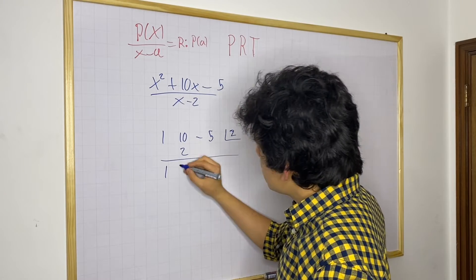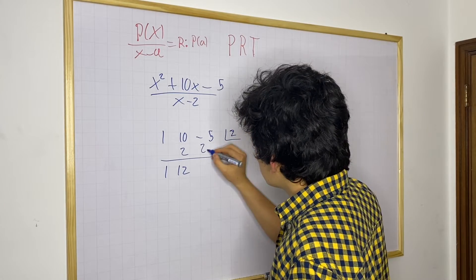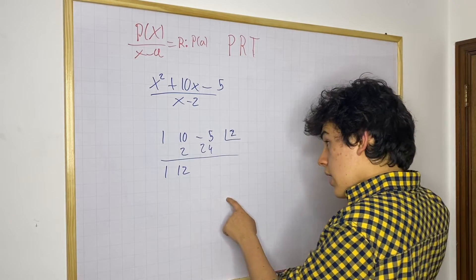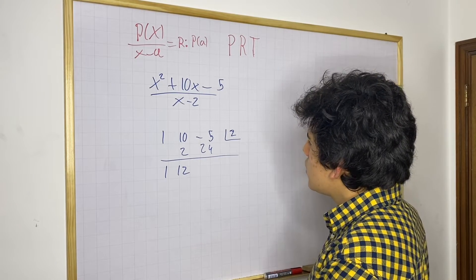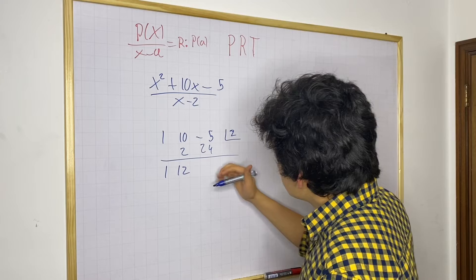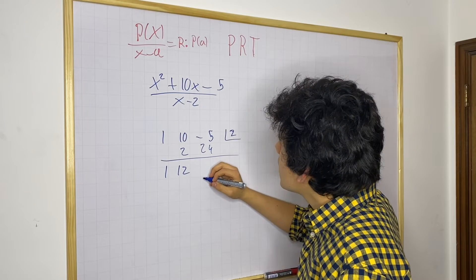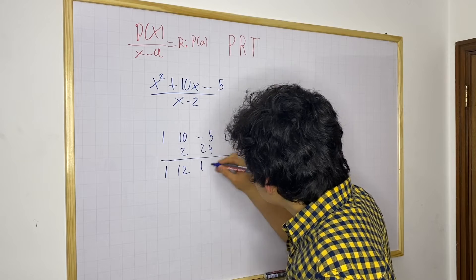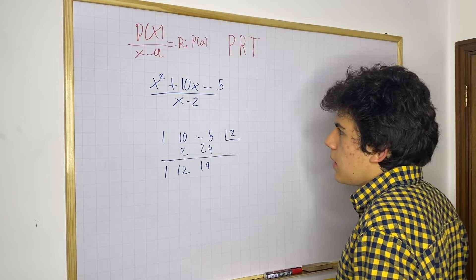1, 2, this is going to be 12, times 24. Add those, and you should get that the remainder in this case would be equal to 19. This is the remainder that we have.